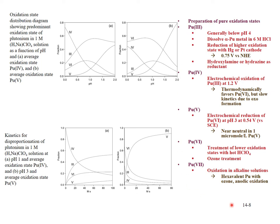Here are routes for producing different oxidation states of plutonium. To make a stock solution with just one oxidation state — for instance the 3 or 4 — you would take your solution, reduce it to the 3 using hydroxylamine, then if you wanted the 4, oxidize that up. Conversely, if you wanted the 6, oxidize everything to the 6; ozone is a very good route for doing this. Then, if you wanted the 5, reduce the 6 to the 5.